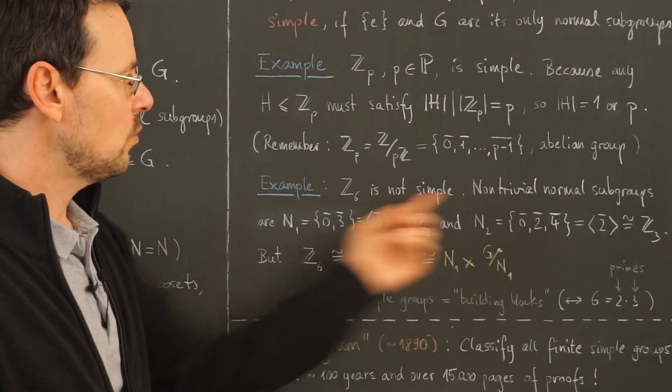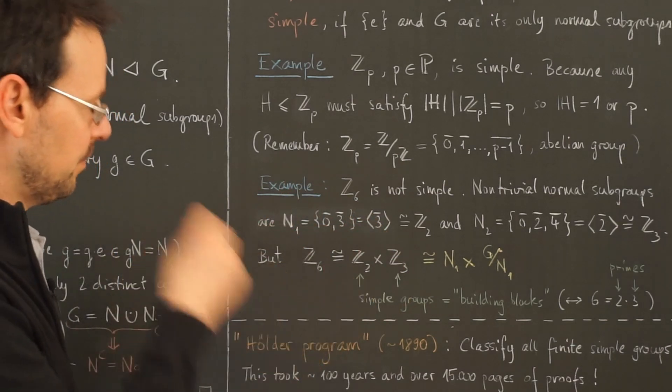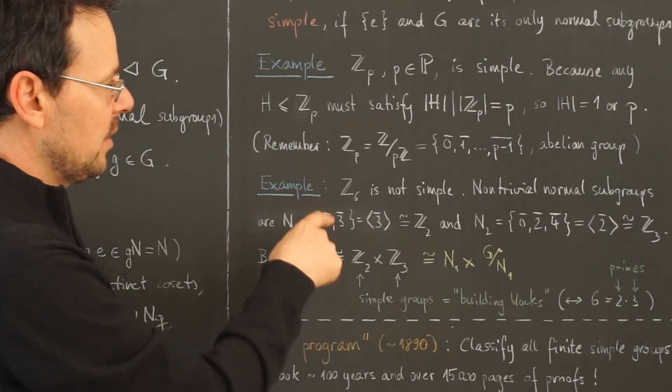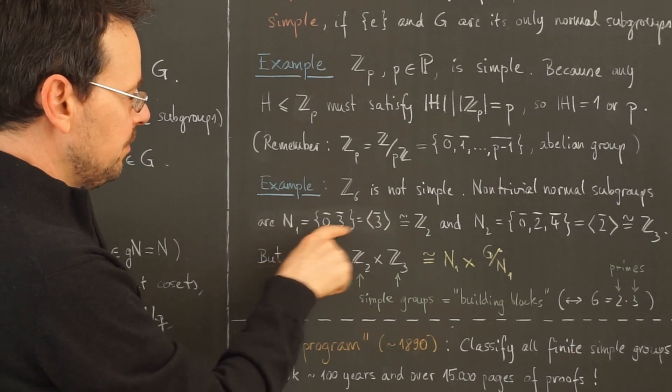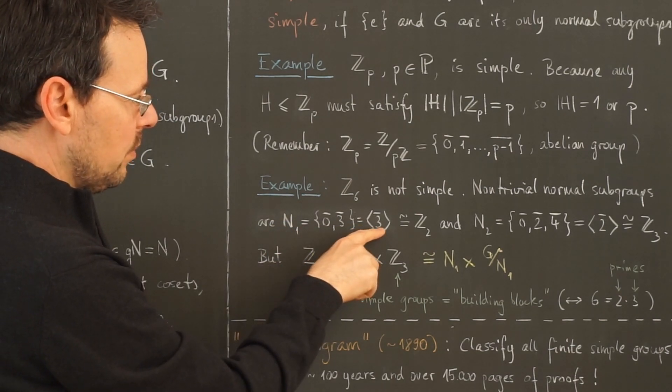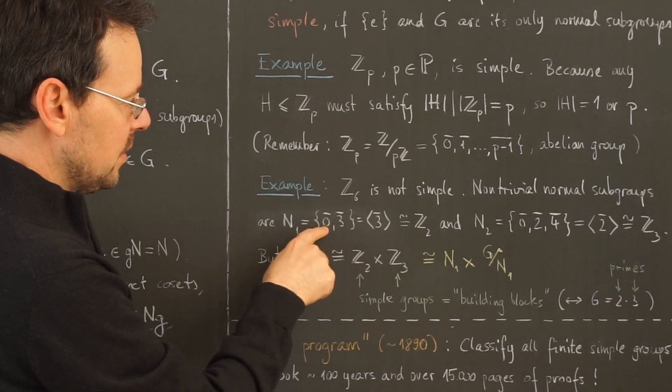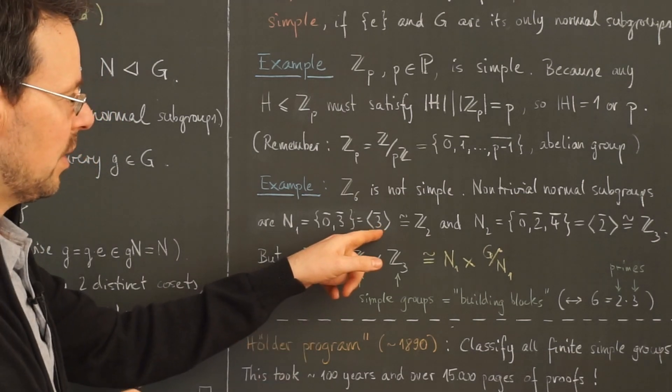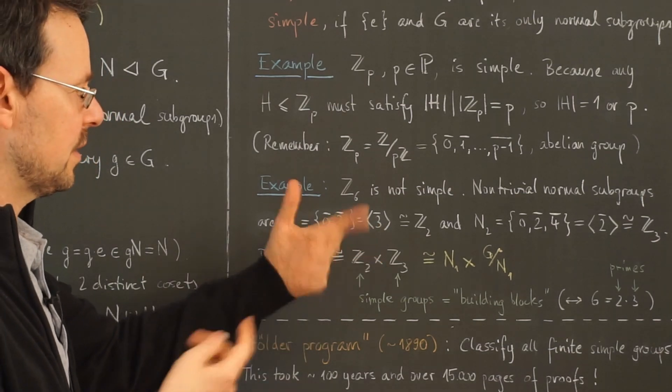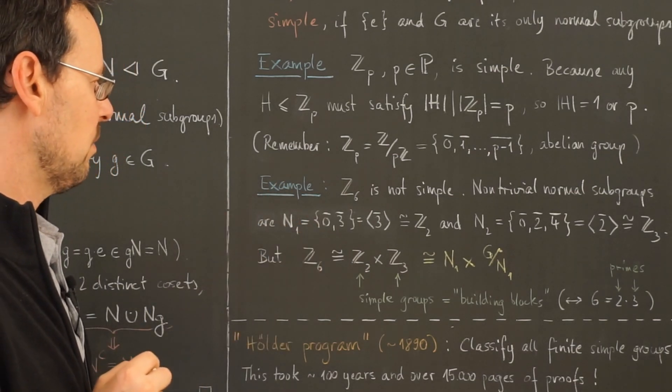Because I can write down two non-trivial normal subgroups. One would suffice, but you will shortly see why I write down these two. This here I call N1, which is the cyclic subgroup generated by 3 bar, which only consists of two elements, 0 bar and 3 bar, because 3 bar plus 3 bar is 6 bar, which is the same residue class as 0 bar.